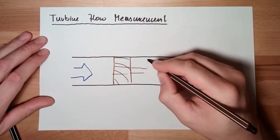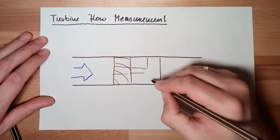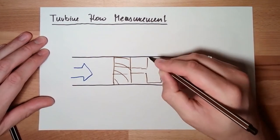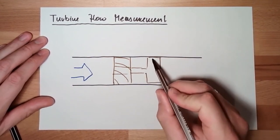And after the guide vanes, we do have practically the same thing, but a thing which can rotate now, this is the turbine.